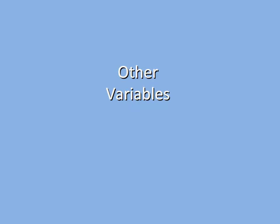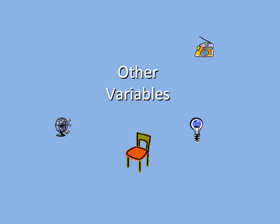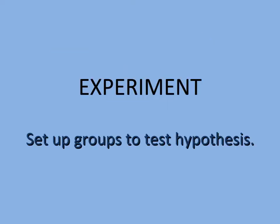All the other variables in the experiment need to be the same. When our two different groups are tested, the lighting needs to be the same, the temperature needs to be the same, the noise level needs to be the same, even the chairs and tables need to be the same. We want to test for just the ice cream — any of these other factors could affect our results. So all the other factors must be controlled so that they are as similar as possible. Now we are finally ready to set up our experiment.